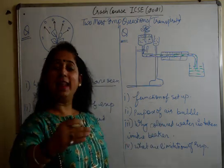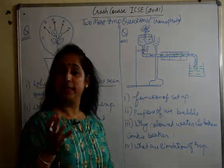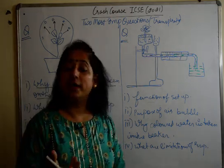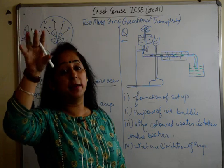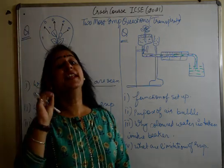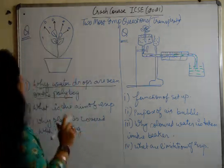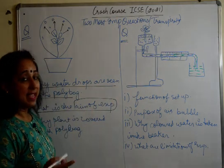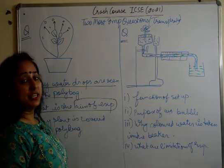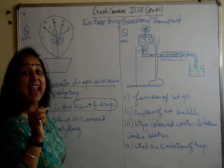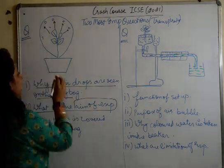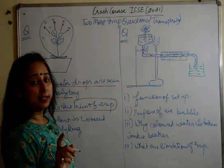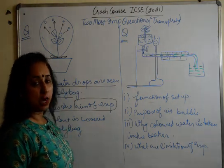Please do not just write 'because of transpiration' — that is a wrong answer. You have to elaborate that transpiration takes place in the form of vapors, and these vapors touch the cold surface of the polybag and change into water droplets. Another question that can be asked is: what is the aim of the experiment? The aim is to study that transpiration takes place from the aerial or upper parts of the plant, not from the roots or parts below the ground.